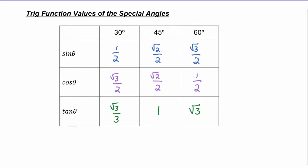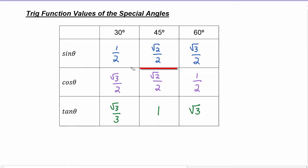An easy way to remember this chart — it's as easy as one, two, three. All the denominators are two. In the sine row, put one, two, three under radicals over two. The cosine row just turns around and is three, two, one. Then picture a fraction bar between the sine and cosine rows to get tangent: one-half divided by radical three over two — the twos cancel, giving one over radical three, which rationalizes to radical three over three. Radical two over two divided by itself is one. And radical three over one is radical three.